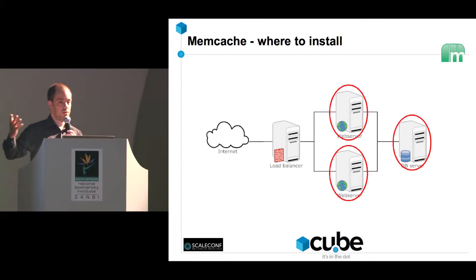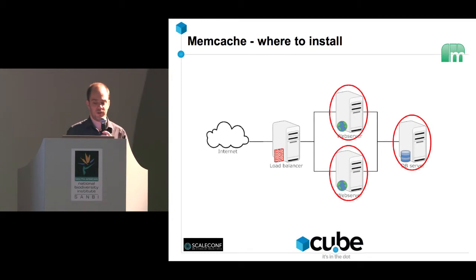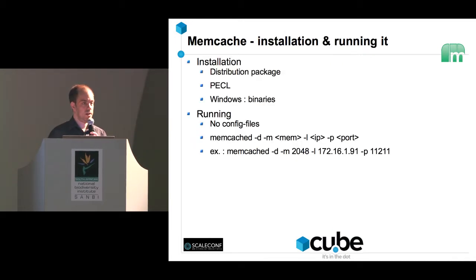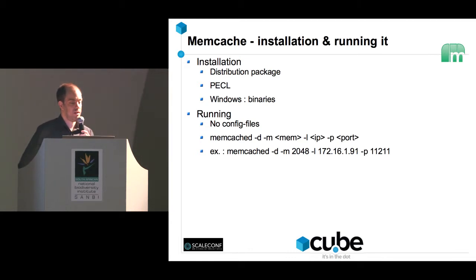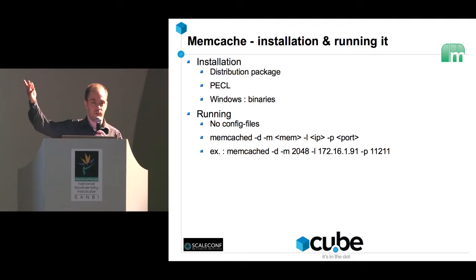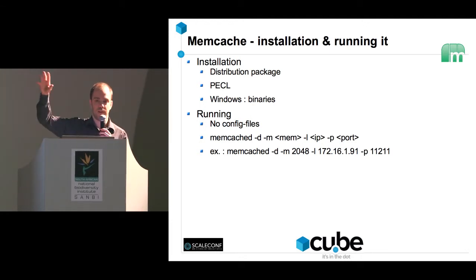Memcached is unbelievably fast — you can send thousands of requests per second and it will handle them without issues. It's non-blocking and uses UDP, which Facebook added. You can install it on your database server, your web server, or on separate memcache servers for very large sites. Installation is very easy — there are packages for every distribution, Windows binaries, and PECL for PHP. You don't even need a configuration file. Run memcached with the amount of memory, an IP, and a port — default port 11211.